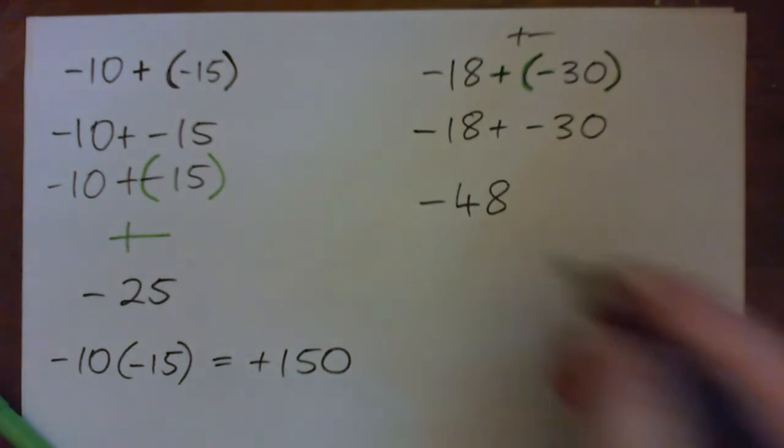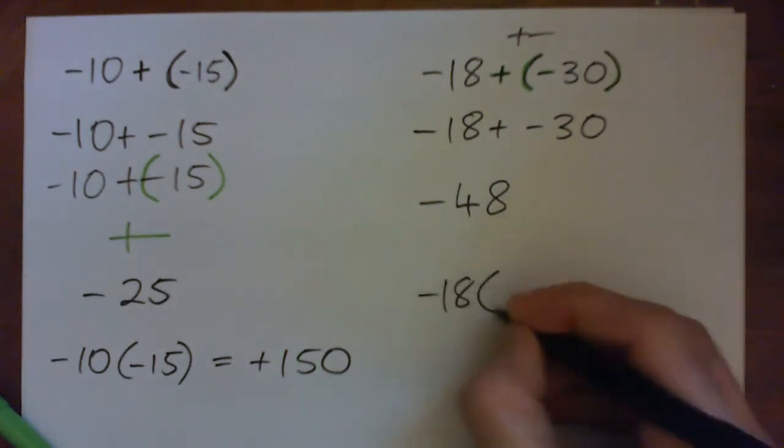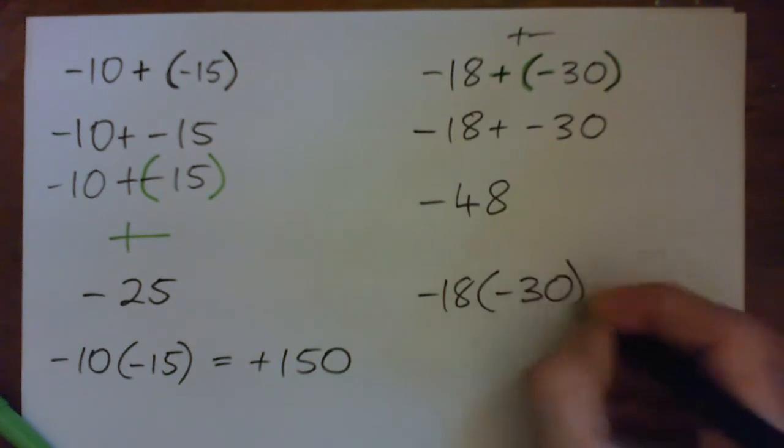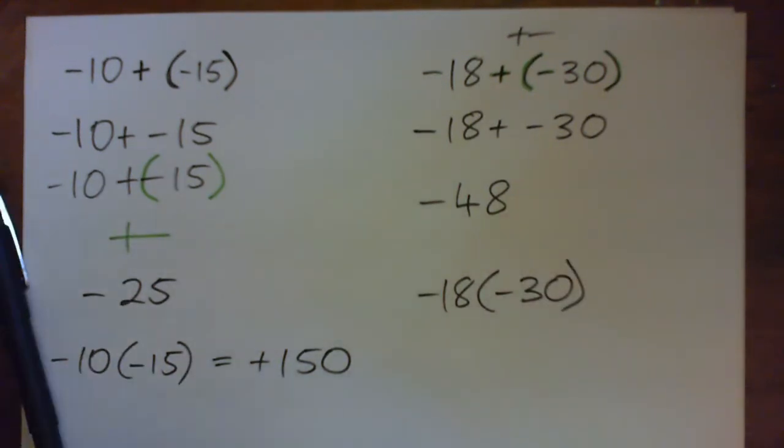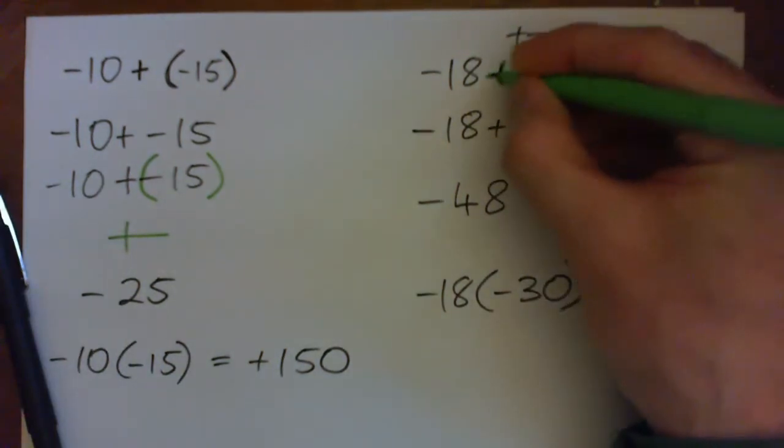And again, if that was negative 18 times negative 30, it would be written like this and you would not have the plus sign separating the numbers.